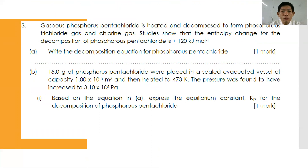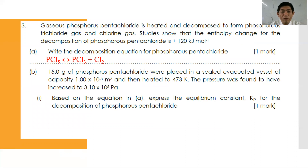Question number three: gaseous phosphorus pentachloride is heated and decomposes to form phosphorus trichloride gas and chlorine gas. The enthalpy change of decomposition is +120 kJ/mol. Part A: write the decomposition equation. You should be able to write a balanced equation: PCl₅ → PCl₃ + Cl₂. Part B: 15.0 grams of phosphorus pentachloride were placed in a 1.00 × 10⁻³ m³ evacuated vessel and heated to 473 K. The pressure increased to 3.10 × 10⁵ Pa. Express the equilibrium constant Kp: Kp = P(PCl₃) × P(Cl₂) / P(PCl₅).